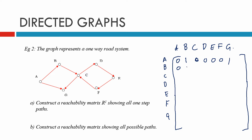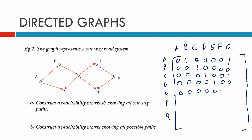B has zeros for A and B, connects to C only — so a one there and all the rest zeros. C does not connect to A, B, or C, connects to D once, doesn't connect to E or F, but does connect to G. D is all zeros except to E. E is all zeros except to F. F connects to C only. G doesn't connect to anything at all. So that completes R1, the one-step matrix.